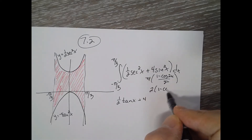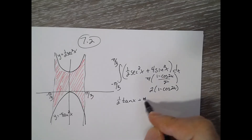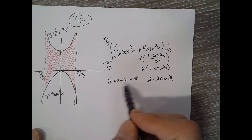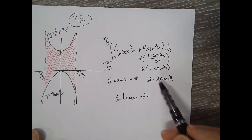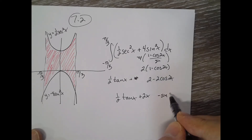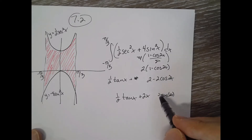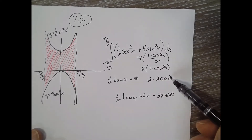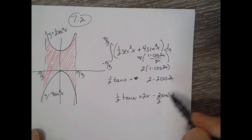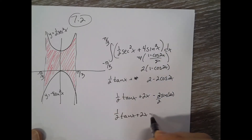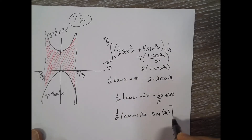Distributing gives 2 minus 2 cosine of 2x. So the full antiderivative is one-half tangent x, plus 2x — then for negative 2 cosine of 2x, the antiderivative is negative sine of 2x, and dividing by 2 from the chain rule gives minus sine of 2x over 2 — simplifying to one-half tangent x plus 2x minus sine of 2x, evaluated from negative pi over 3 to pi over 3.